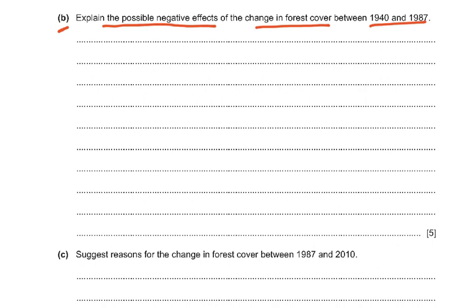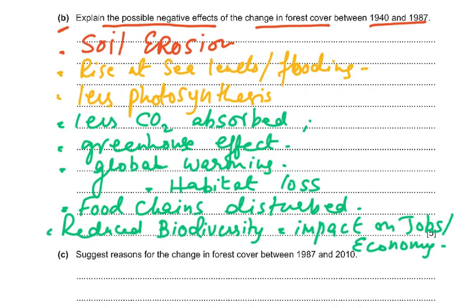It's also going to result in loss of jobs and impact on the economy — if people used to visit that forest and tourism was being promoted, hotels lose clients and tourist guides lose their jobs. From the mark scheme: soil erosion, increase in sea levels causing flooding, less photosynthesis so less carbon dioxide absorbed, carbon dioxide is a greenhouse gas causing global warming, habitat loss for birds and insects, disrupted food chains with no primary or secondary consumers, reduced biodiversity, and negative impact on jobs and economy.